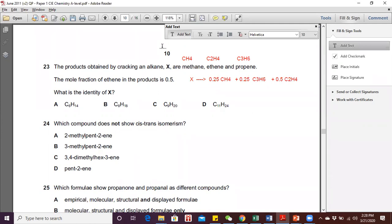The next step is to convert these moles into whole numbers by multiplying by 4 to get the simplest ratio. This allows us to find the total C and H for X. So 0.25 times 4 equals 1 mole: CH4 plus C3H6 plus 0.5 times 4 equals 2, giving us 2 moles of C2H4.